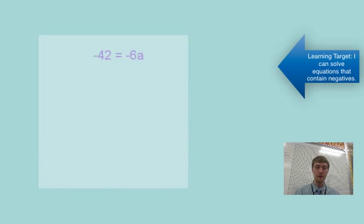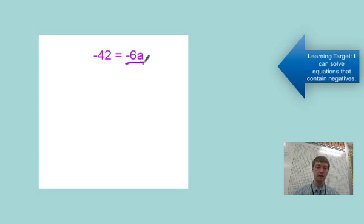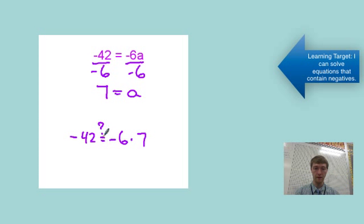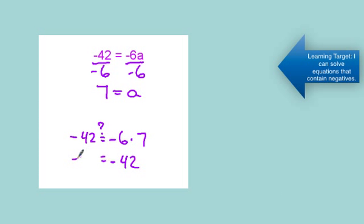Next problem is negative 42 equals negative 6 times a. Multiplying by negative 6, the opposite is dividing by negative 6. Be careful here because a lot of times people will forget and divide by 6 and not negative 6. We get negative divided by negative is positive, so a equals 7. Then we're going to plug in: negative 6 times 7 makes negative 42, because a negative times a positive means we're repeatedly adding that negative number.